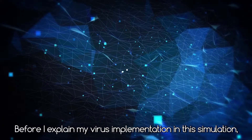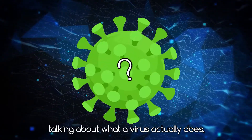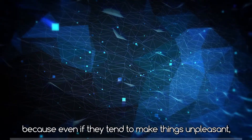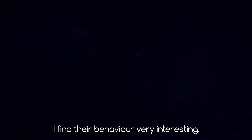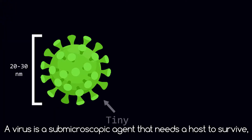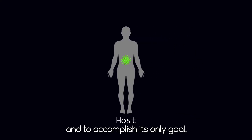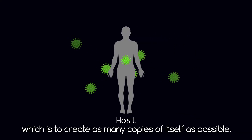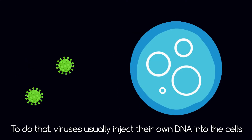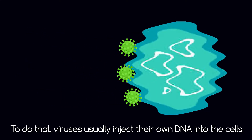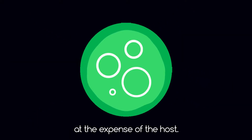Before I explain my virus implementation in the simulation, I thought it would make sense to spend some time talking about what a virus actually does, because even if they tend to make things unpleasant, I find their behavior very interesting. A virus is a submicroscopic agent that needs the host to survive, and to accomplish its only goal, which is to create as many copies of itself as possible. To do that, viruses usually inject their own DNA into the cells of their host to trick them into rapidly creating copies of the virus, at the expense of the host.